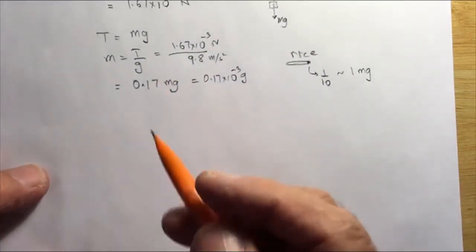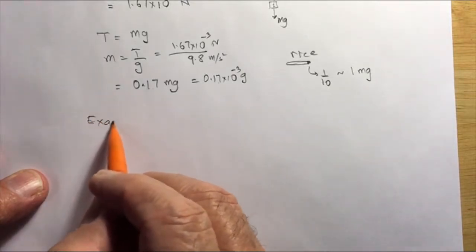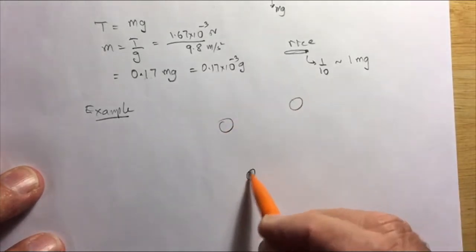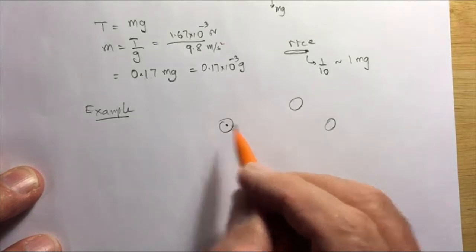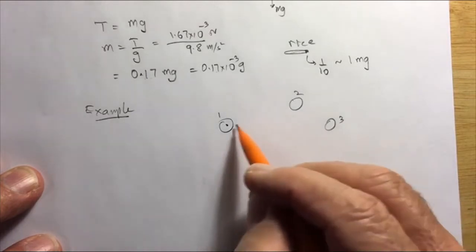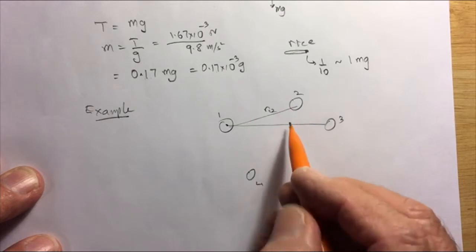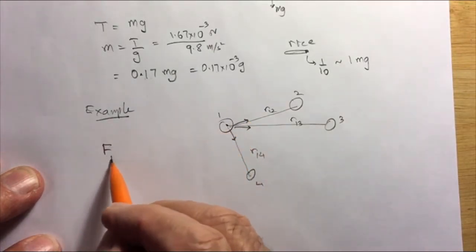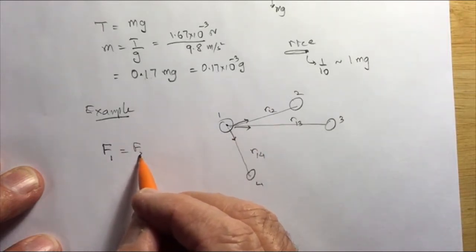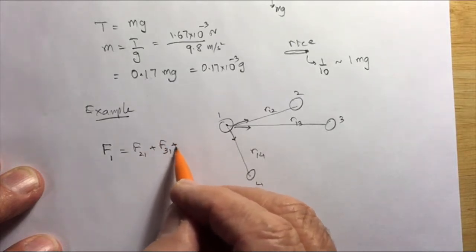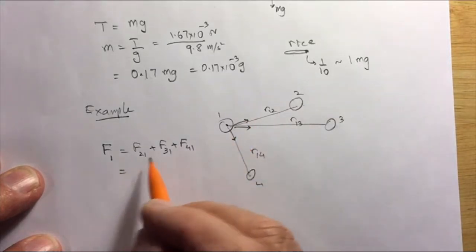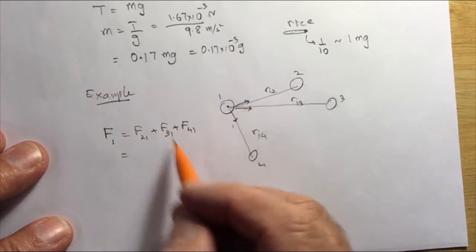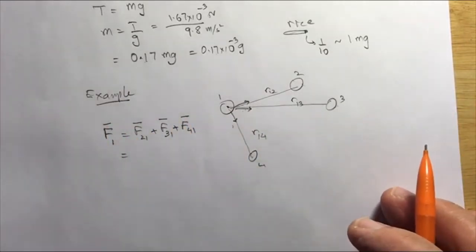When you have multiple masses — say four masses — the force on mass 1 due to all others is the vector sum of the forces due to mass 2, mass 3, and mass 4. Each uses the same gravitational equation with the appropriate distance and unit vector. Add all the force vectors together and you get the net gravitational force on mass 1.